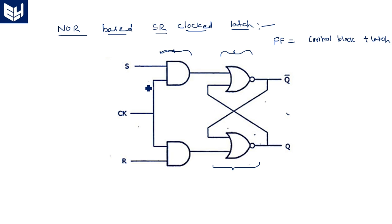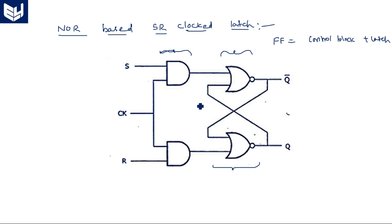The NOR-based SR latch forms the memory element, and the first block is the control section where the clock input is applied along with inputs S and R. If you observe, two AND gates are used in front of the latch. The first AND gate has input S along with the clock input, and the second AND gate has input R along with the clock input. The outputs of these two are connected to the SR latch.